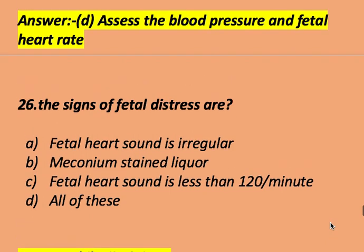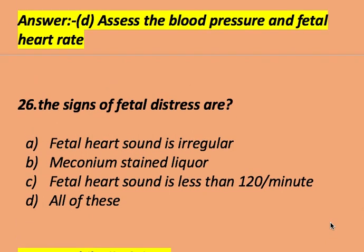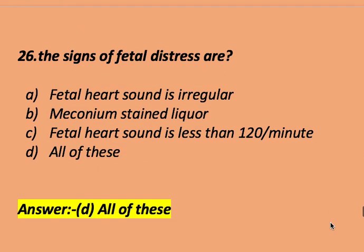The signs of fetal distress are: fetal heart sound is irregular, meconium-stained amniotic fluid is present, and fetal heart rate is less than 120 beats per minute. The right answer is all of these.